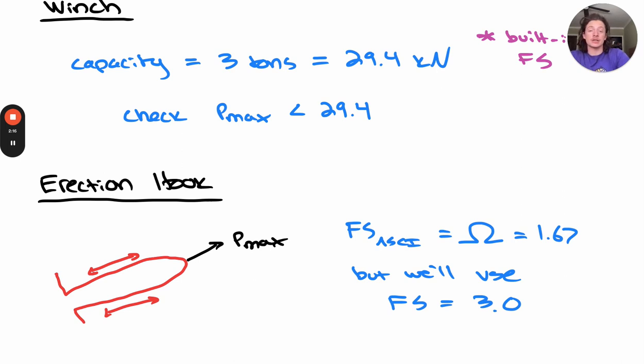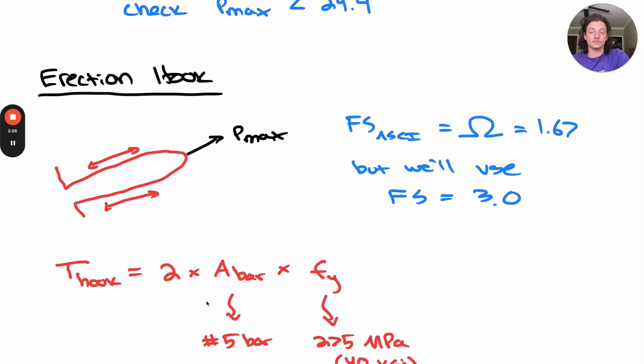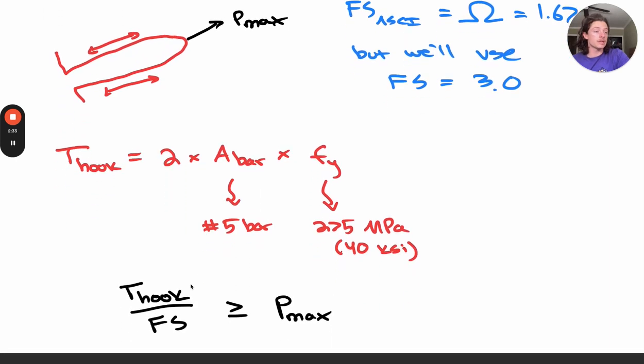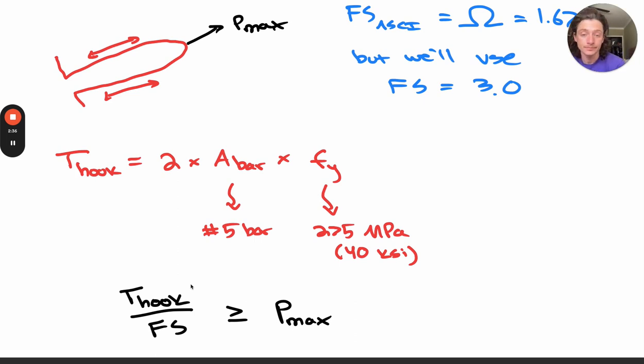The erection hook can be seen in the anchor details, and I'll paste that in the text below so you can check that out. To find the tension capacity of our erection hook, we use 2 times area of the bar times Fy, where the bar area is for a number 5 bar and a strength of 275 MPa or 40 KSI. Erection hooks should always be at least number 5 bar as specified in the standard drawings.